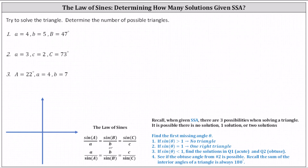In this lesson, we'll be using the law of sines when given side-side-angle to determine whether there are no possible triangles, one possible triangle, or two possible triangles. We won't actually be solving the triangles — we will just be determining the number of possible triangles.